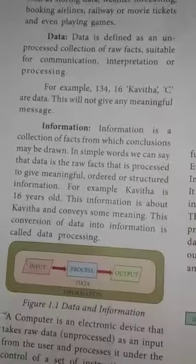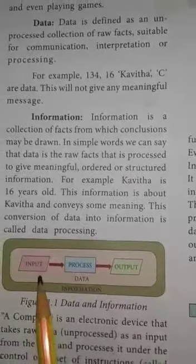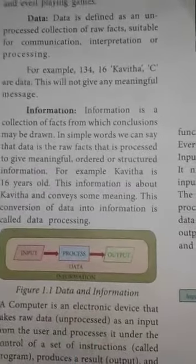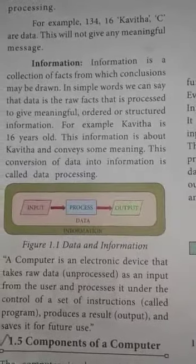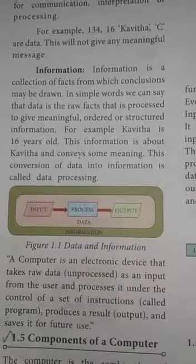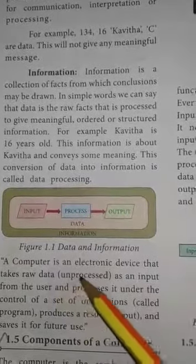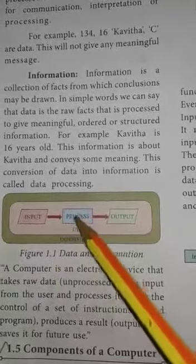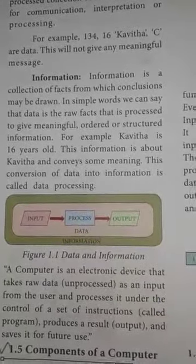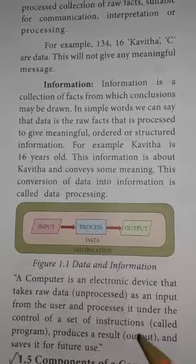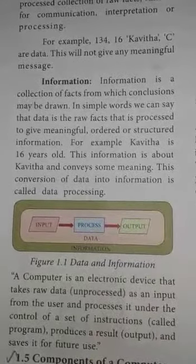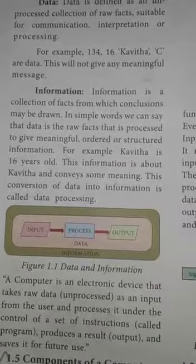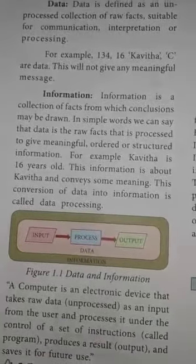All input and output processes involve data. That means input, process, output — in between, we have data and information. The data is gathered and then a complete specific information is produced. A computer is an electronic device that takes raw unprocessed data as input, processes it, and produces information as output. Information is a collection of raw facts. This is the difference between data and information.